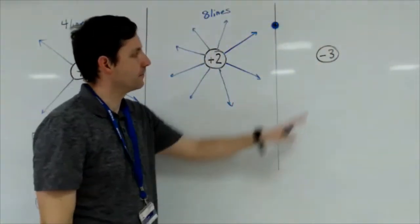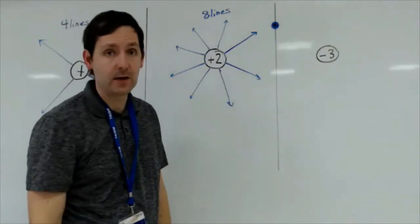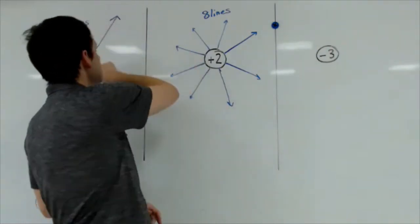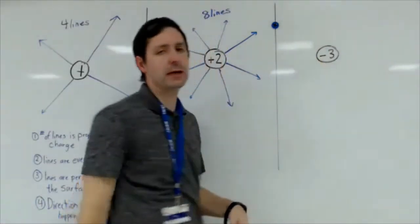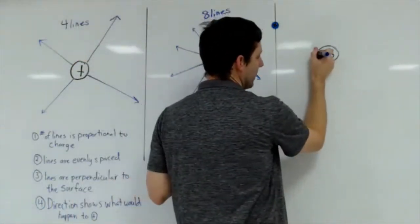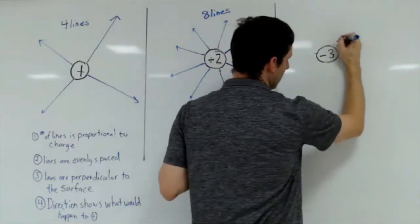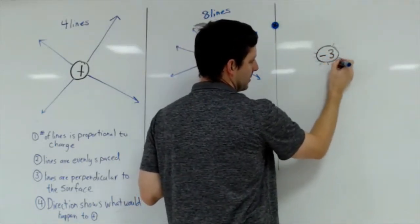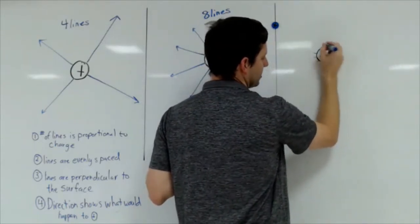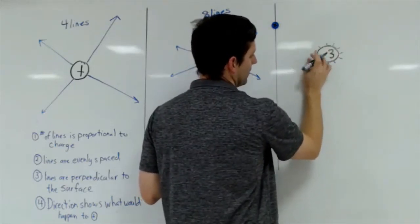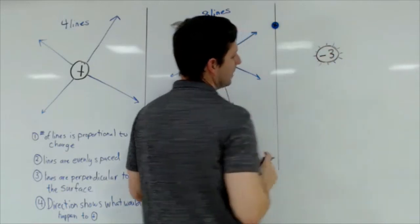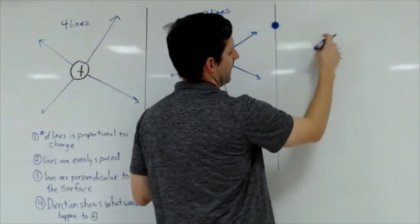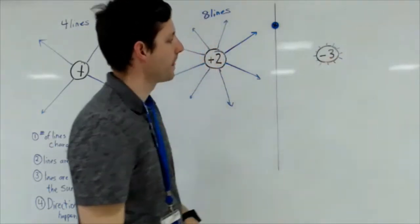Now for the negative three charge. I had four lines for one and eight for two, so negative three needs twelve lines. I'll start with four evenly spaced and then add two in between each, doing my best to keep them perpendicular to the surface. I'll adjust them as I go to make sure they're evenly spaced — one, two, three, four... up to twelve.